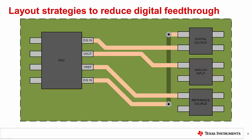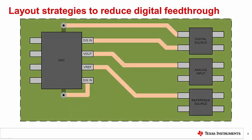Now that we have discussed the most common sources of digital feed-through, let us talk about some strategies we can implement to reduce it. First, we can consider how to improve the PCB layout to reduce capacitive and inductive coupling between analog and digital signals. Here we can see the original layout used as an example earlier. Some simple routing changes would allow the analog traces to have more distance and less capacitive coupling to the digital traces. By routing the digital signals around the analog traces, we have improved the digital feed-through of the design.